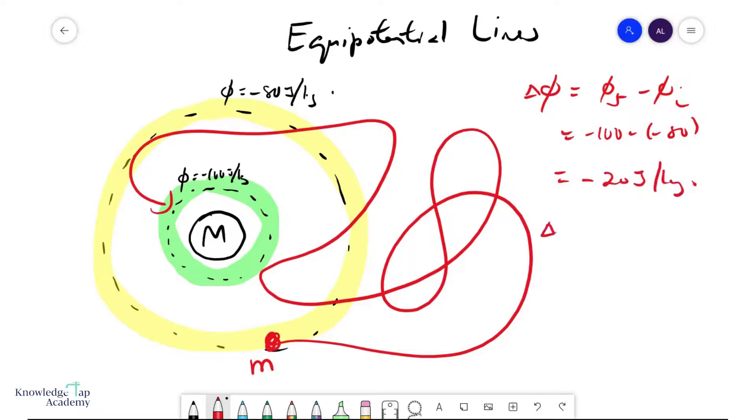And so if I want to find this change in GPE, then that's just M Δφ, which will be the mass of this object times -20.